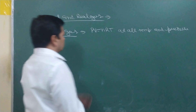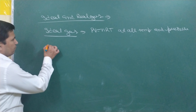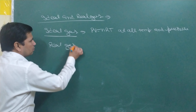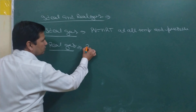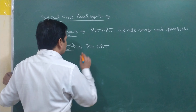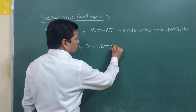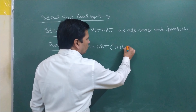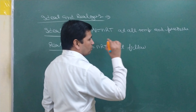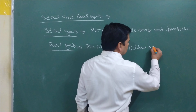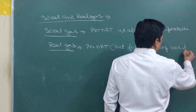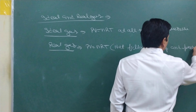At every temperature and pressure, PV = nRT holds. And if any gas does not follow PV = nRT — the ideal gas equation — at all temperatures and pressures, that is known as real gas. A real gas does not obey the ideal gas equation at all temperatures and pressures — not at every temperature, only at some particular temperature and pressure.